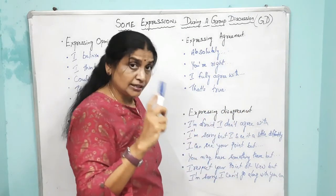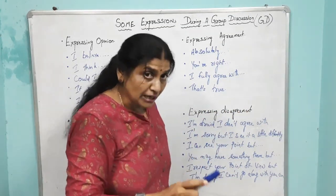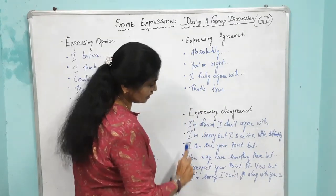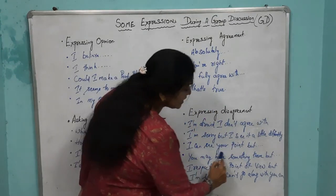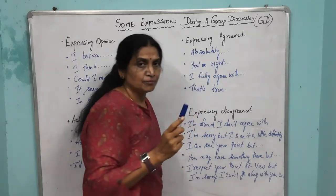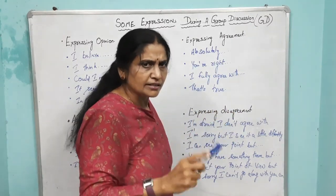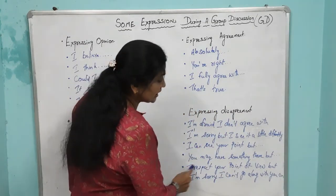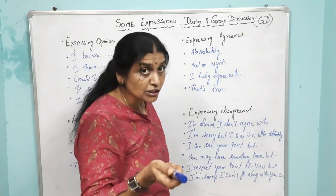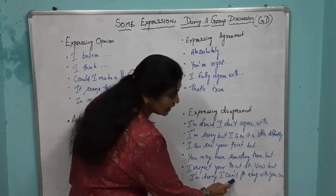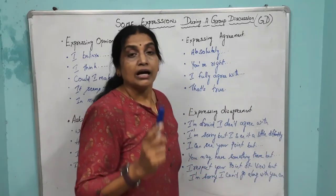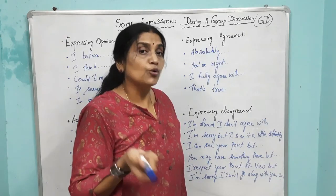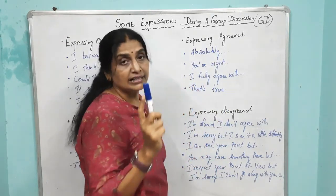You can also say: 'I can see your point, but...' — meaning you understood what they wanted to say, but you have a different view. Or: 'You may have something there, but...' or 'I respect your point of view, but...' or 'I am sorry, I can't go along with you — I have a different opinion.' This is how you express your disagreement politely.